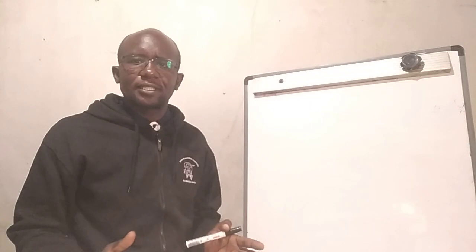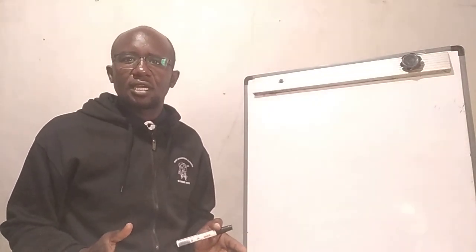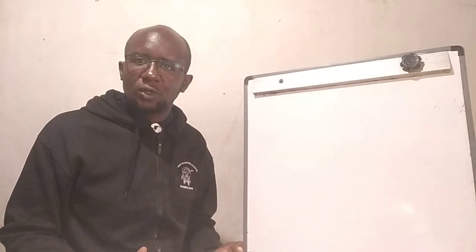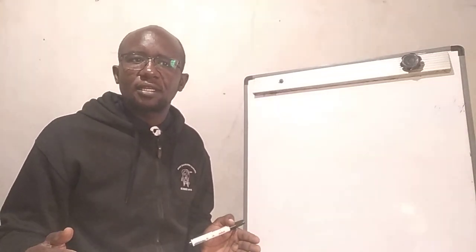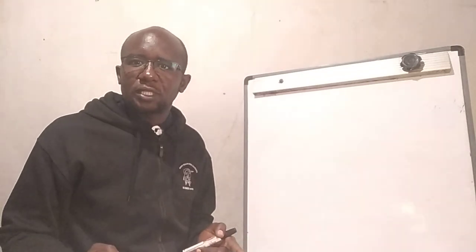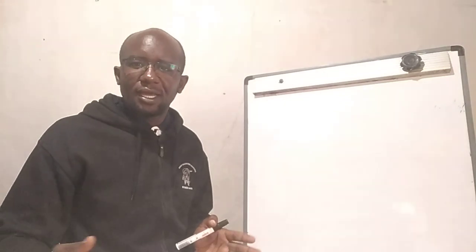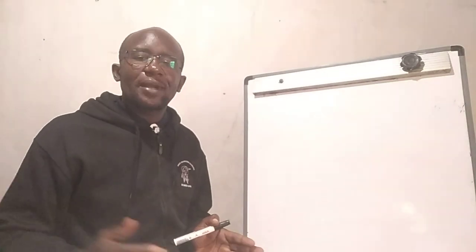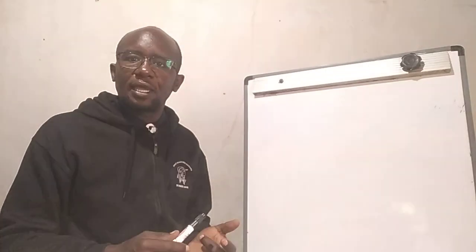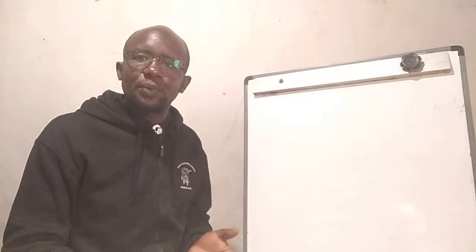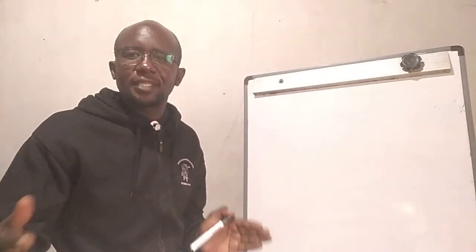We need to understand how Tuta Absoluta behaves. This is with respect to its life cycle. As temperatures increase, then the life cycle of Tuta Absoluta shortens. That means we'll have more generations if the temperatures are higher. But ideally, the temperature that's moving from egg, larvae, pupa and adult, takes about 24 to 38 days.